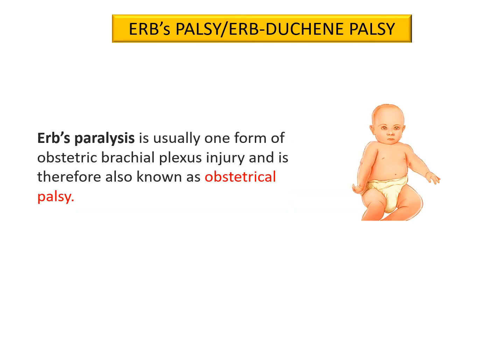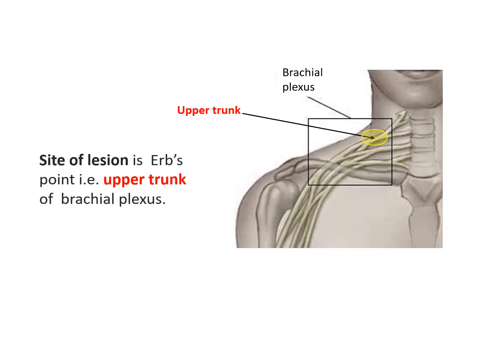Erb's palsy or Erb-Duchenne palsy is usually one form of obstetric brachial plexus injury and is therefore also known as obstetrical palsy. The site of lesion in Erb's paralysis is known as Erb's point. It is located on the upper trunk of the brachial plexus.